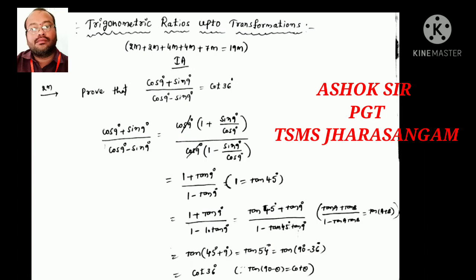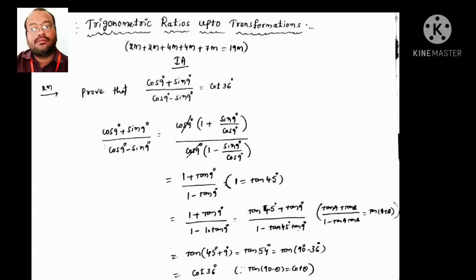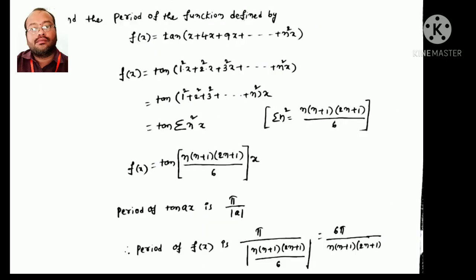Since 1 = tan45°, replace 1 with tan45° everywhere. So we get (tan45° + tan9°) / (1 − tan45°·tan9°), which equals tan54°. Since 54° = 90° − 36°, this equals cot36°. So we prove the value equals cot36°.